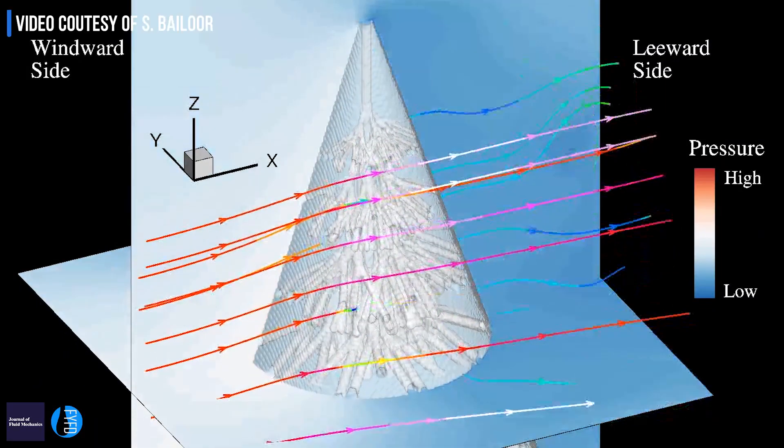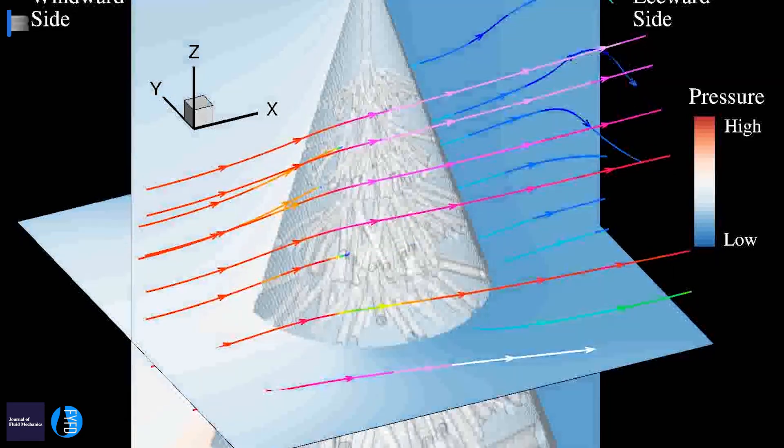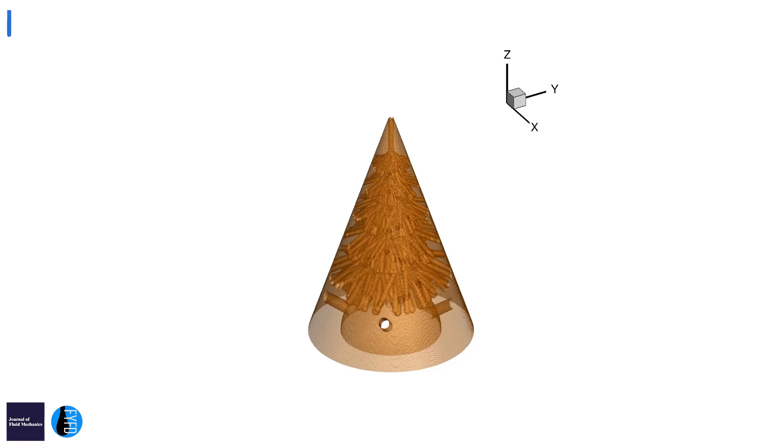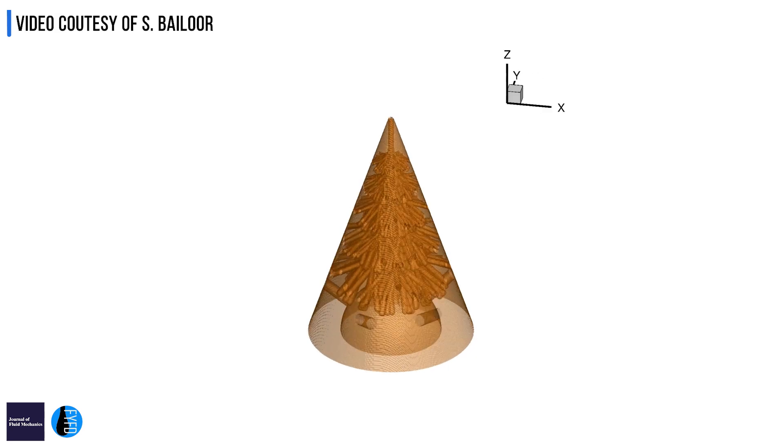The work we've done is numerical simulations of airflow inside termite mounds. In a pair of human lungs you'd suck in air through the trachea and then it would branch out, but in termite mounds it works in just the opposite way.